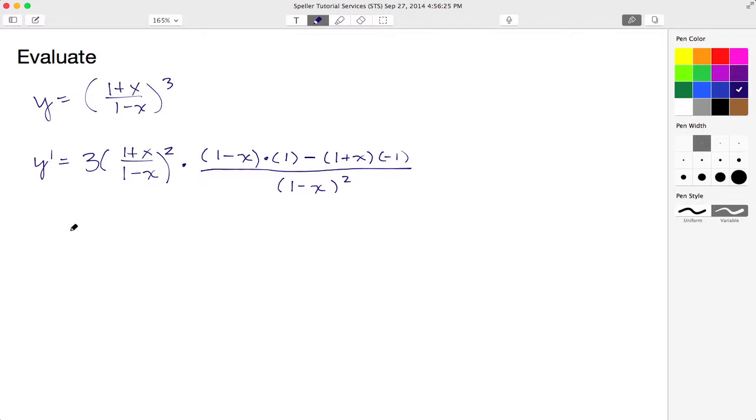Now let's go ahead and begin some simplification here. Let's rewrite: 3, the 1 plus x over the 1 minus x, that quantity is squared, times, well I've got 1 times this quantity which just gives me that quantity back which is 1 minus x. And then here I got a negative and another negative which is going to make this positive, so I'm going to rewrite this as a plus.